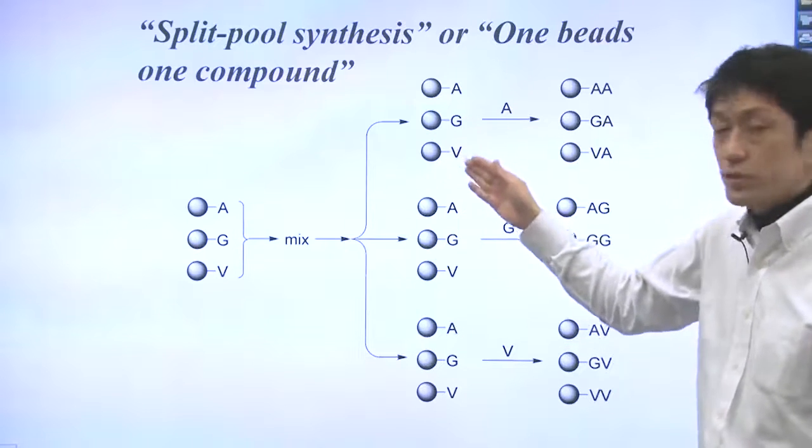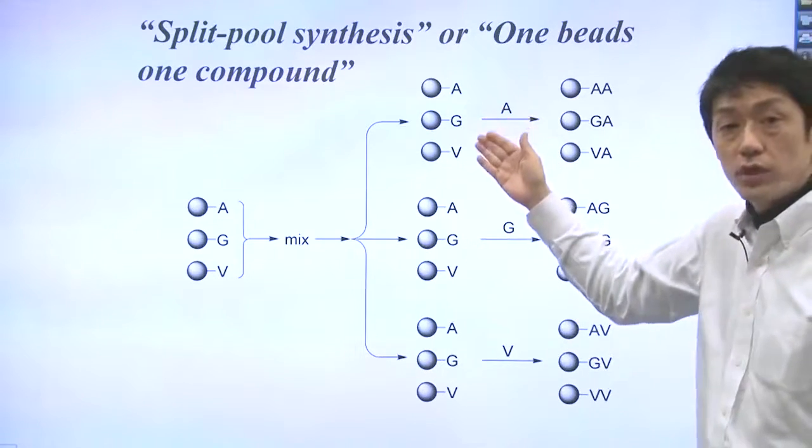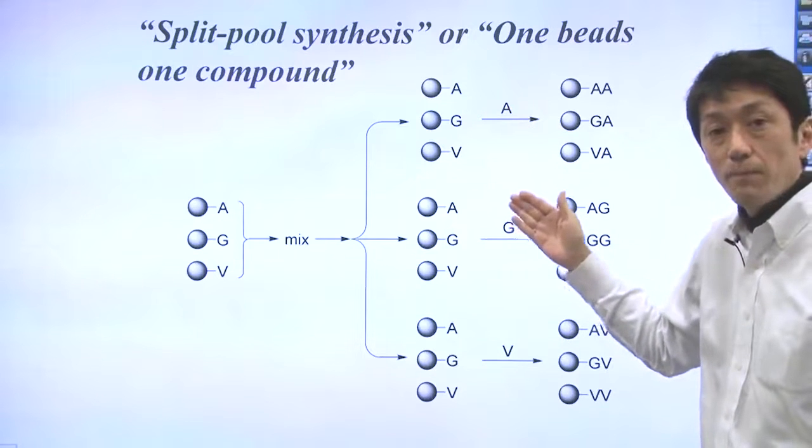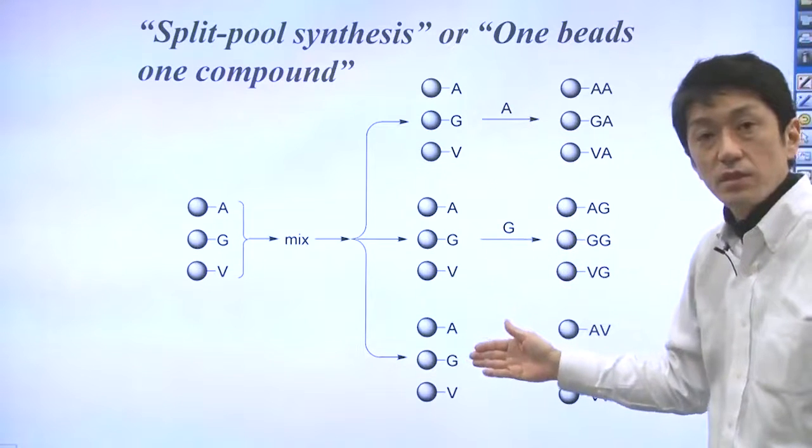So, the tubes should contain all three types of amino acids bound beads. Right?